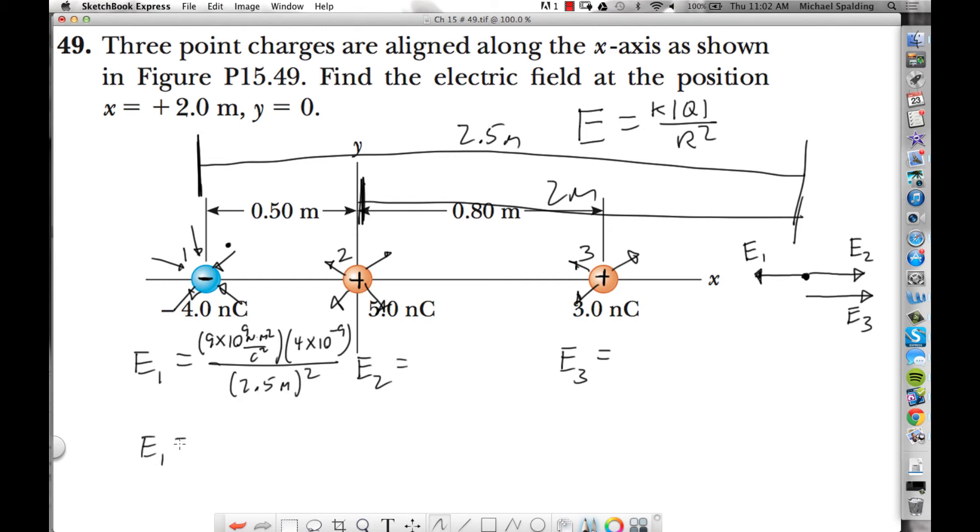So E1 comes out as 5.76 newton per Coulomb to the left. Right? We already know that. Which is negative. Does this negative come from the equation or from just the fact that we know that E1 is to the left? E1 is to the left. The equation is not going to tell you the direction.